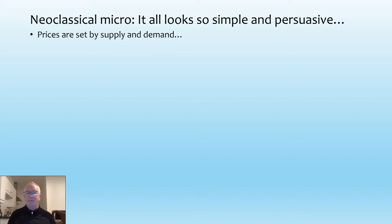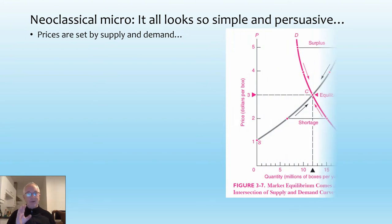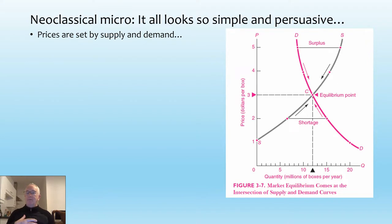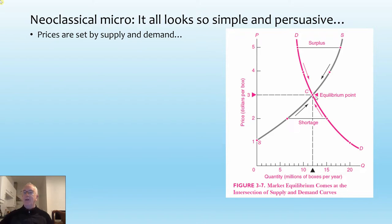You get the argument, and you read this so often: prices are set by supply and demand. The drawing — and I emphasise, this is a drawing, it is not real data — shows demand falling as prices rise, supply rising as prices rise, but you have to pay a higher price to get the output. And there's an equilibrium where the level demanded is equal to the level supplied, and that's the ideal situation for the market.